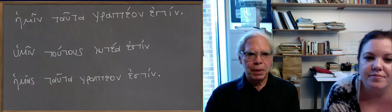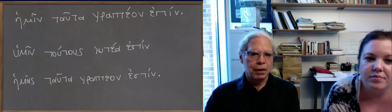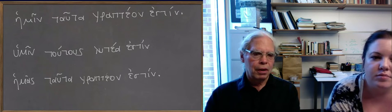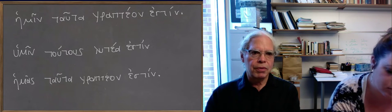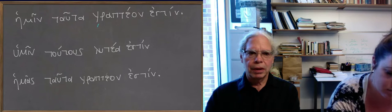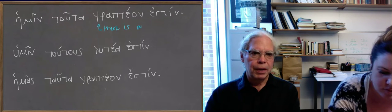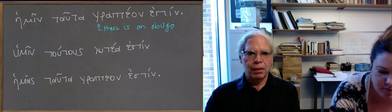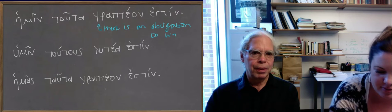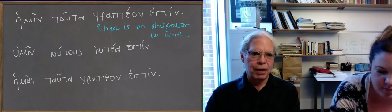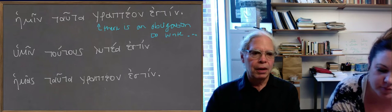Here we have hemin tauta rapteon estin, again the impersonal construction. There is an obligation on our part, hemin, to us, to write these things. That's the hemin, the dative of the agent, and tauta is the direct object.